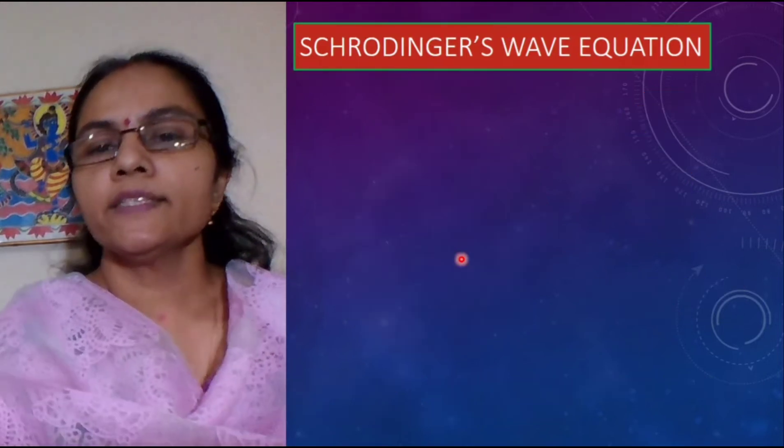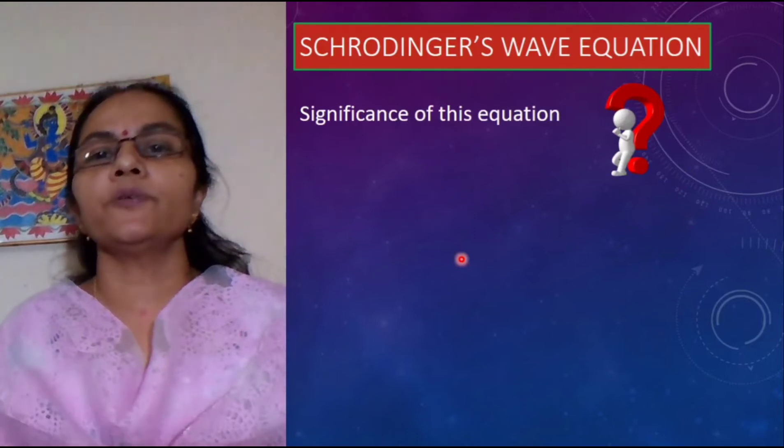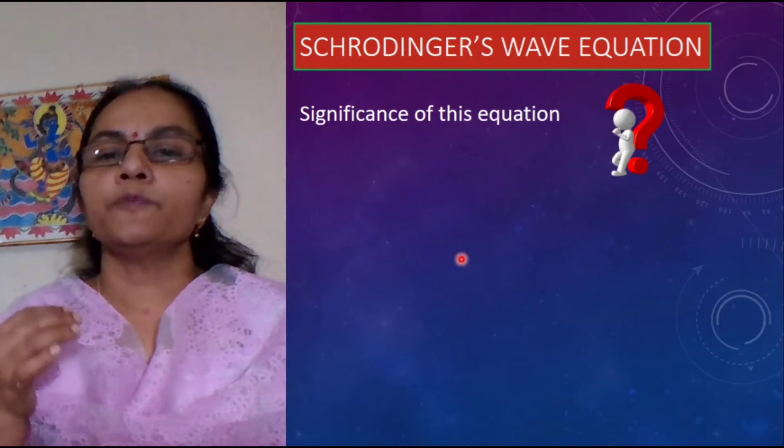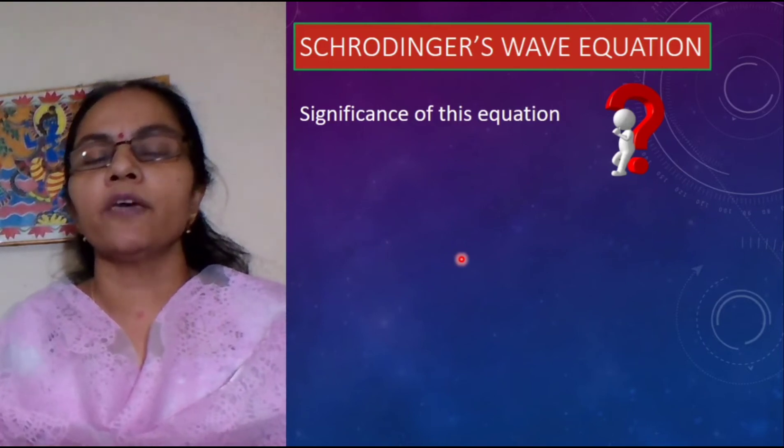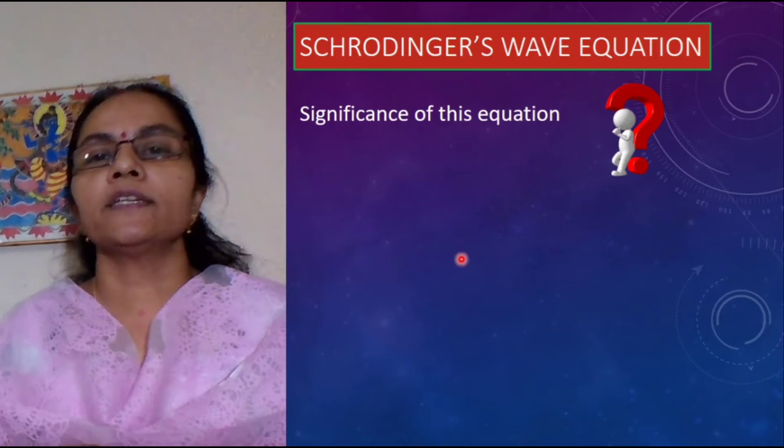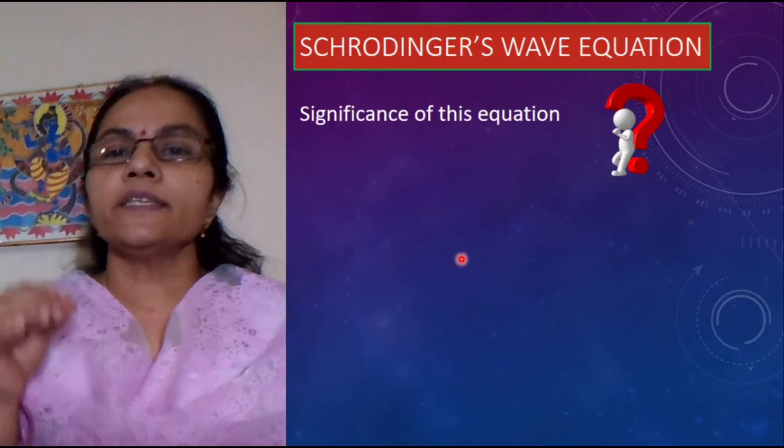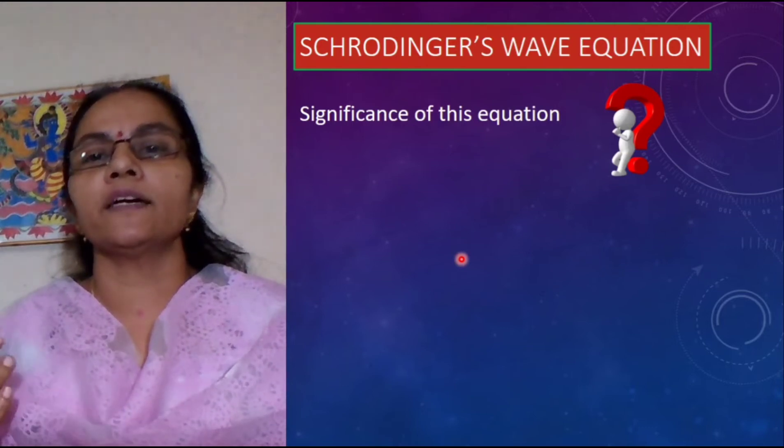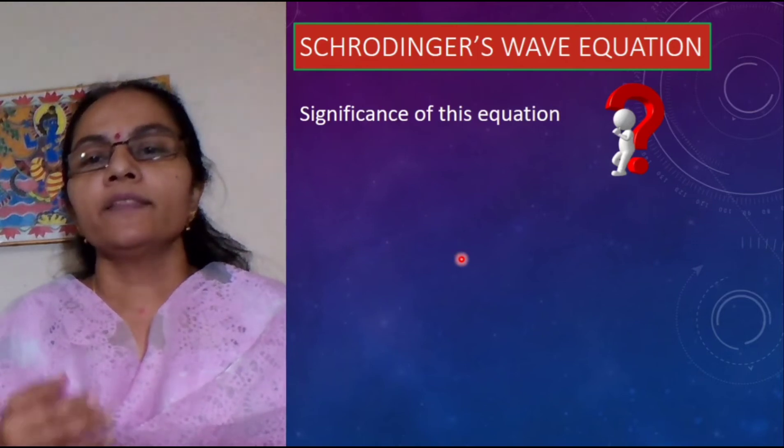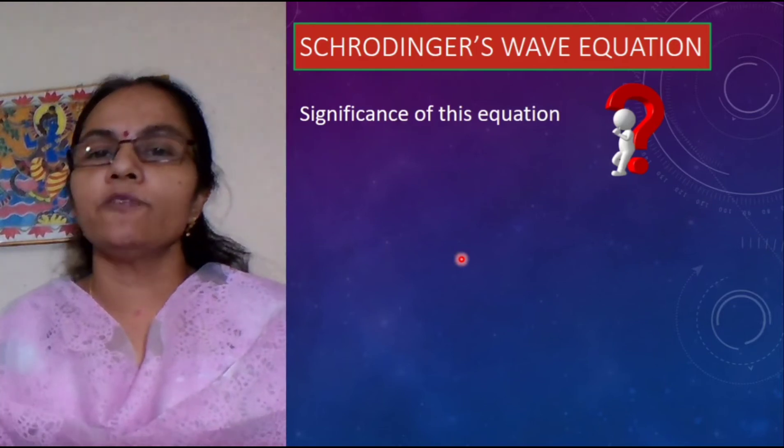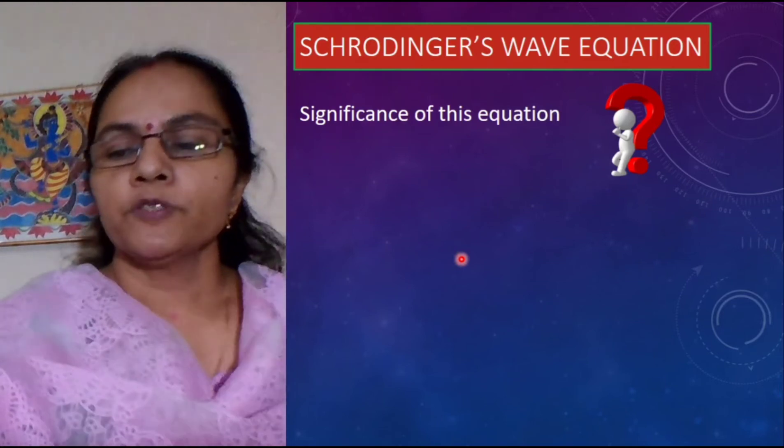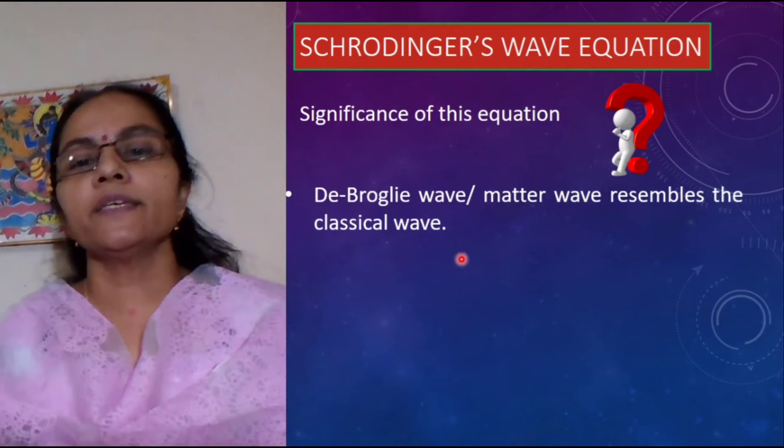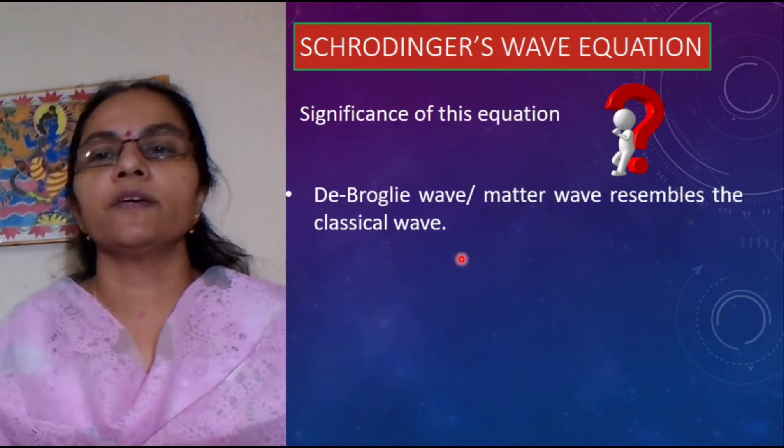Now what is the significance of this equation? Why should we learn this equation? In some of our previous lectures what we have seen that a moving matter particle is always associated with a wave and it also poses a dual nature like our light wave. So based on this concept Schrodinger thought if this matter wave is behaving like our light wave and it is a wave then there must be some similarity between the classical waves and this matter wave. So based on these assumptions he told that this de Broglie wave or matter wave resembles the classical wave like our heat wave and sound wave.